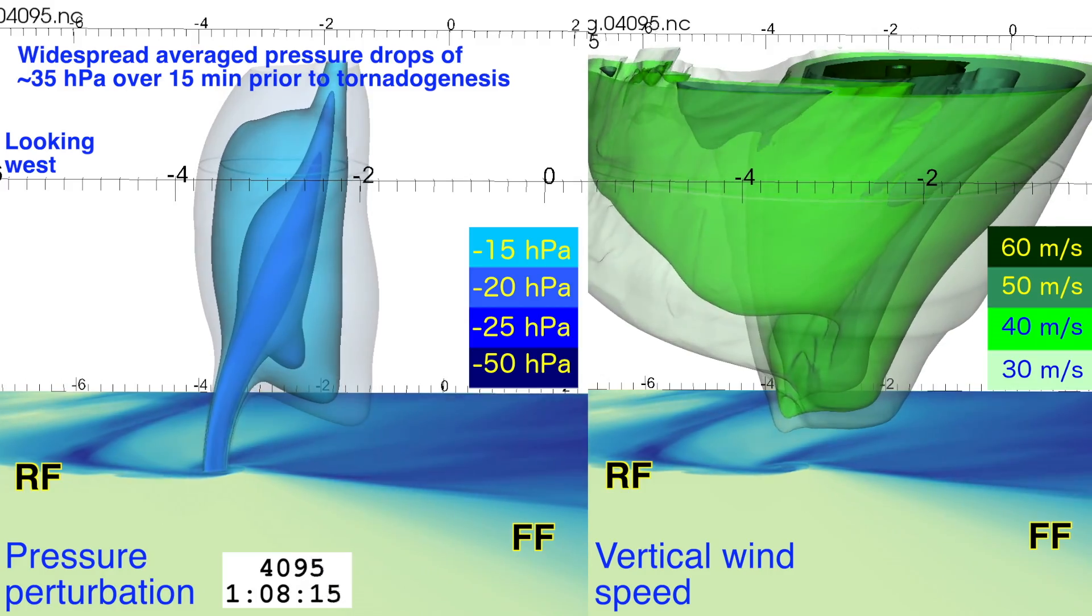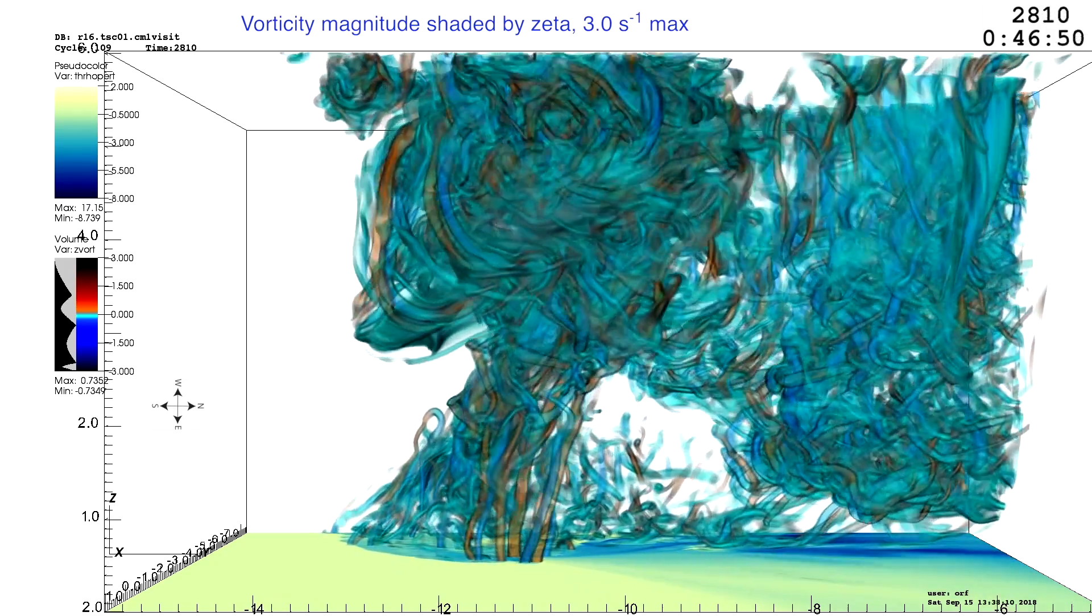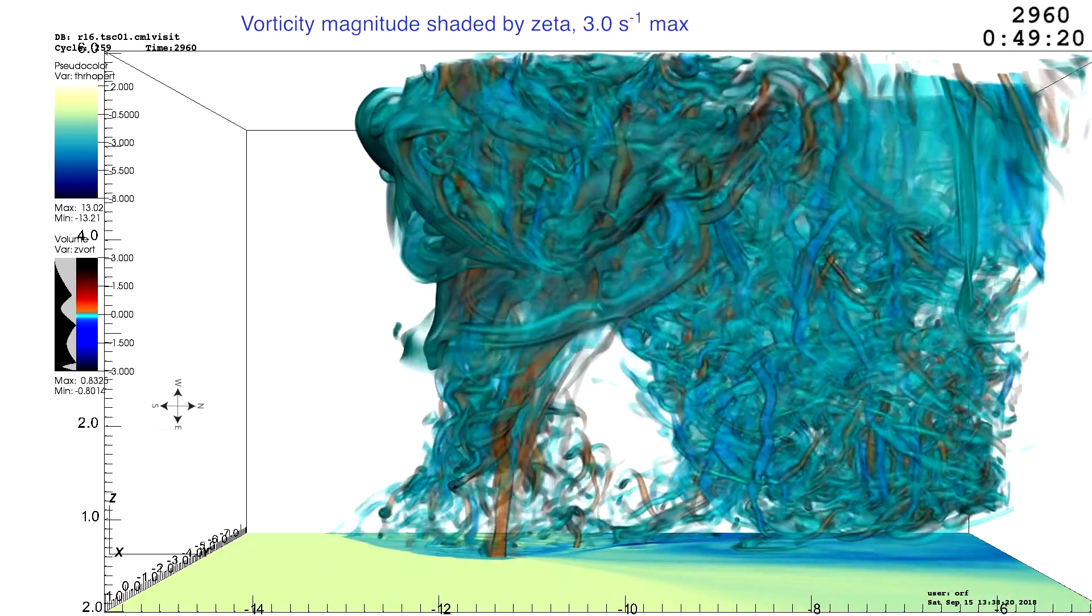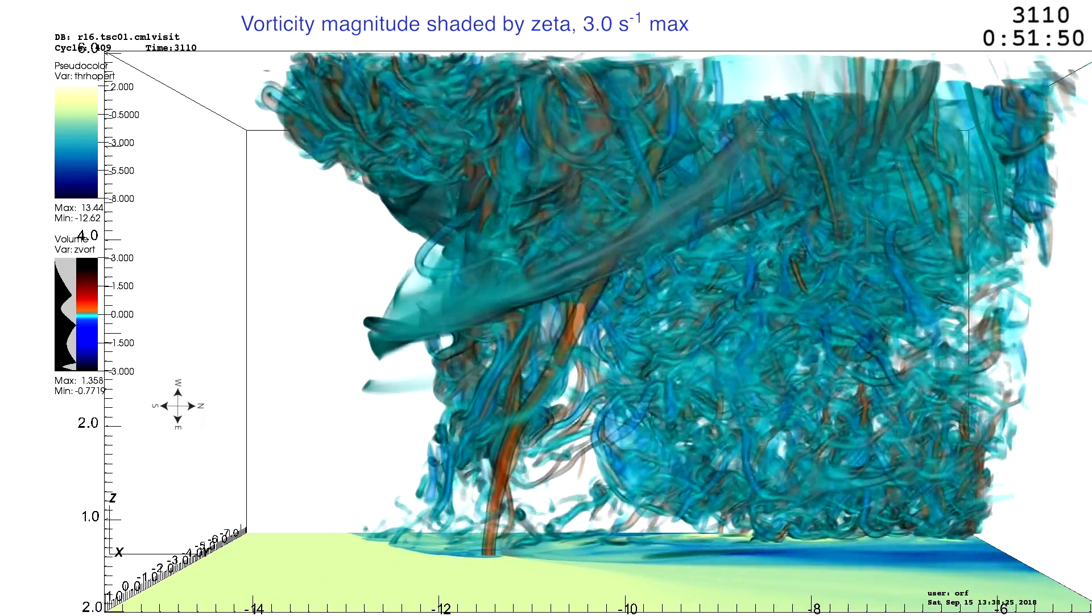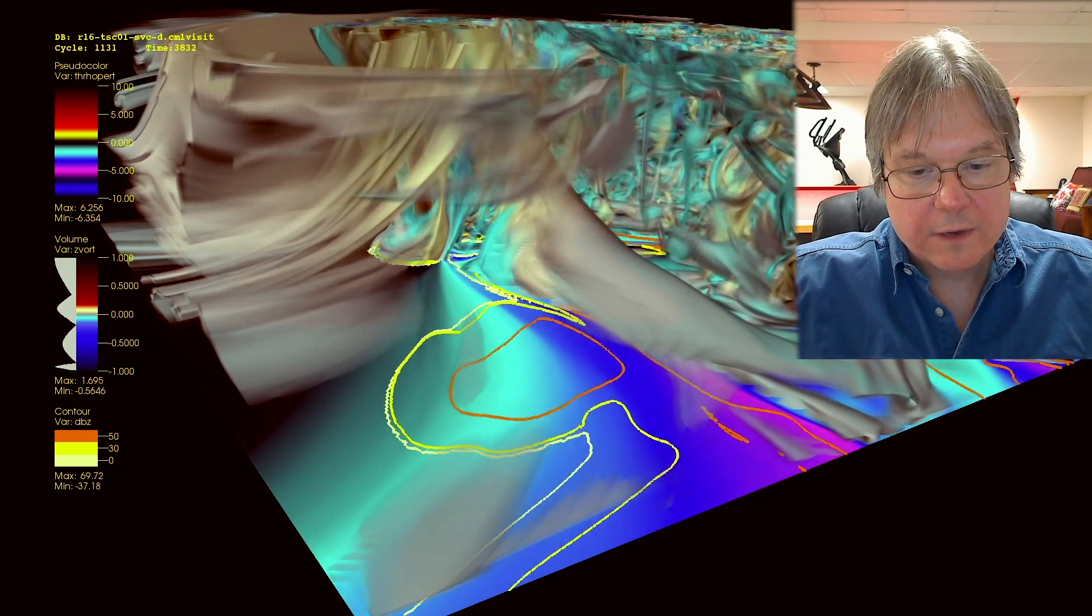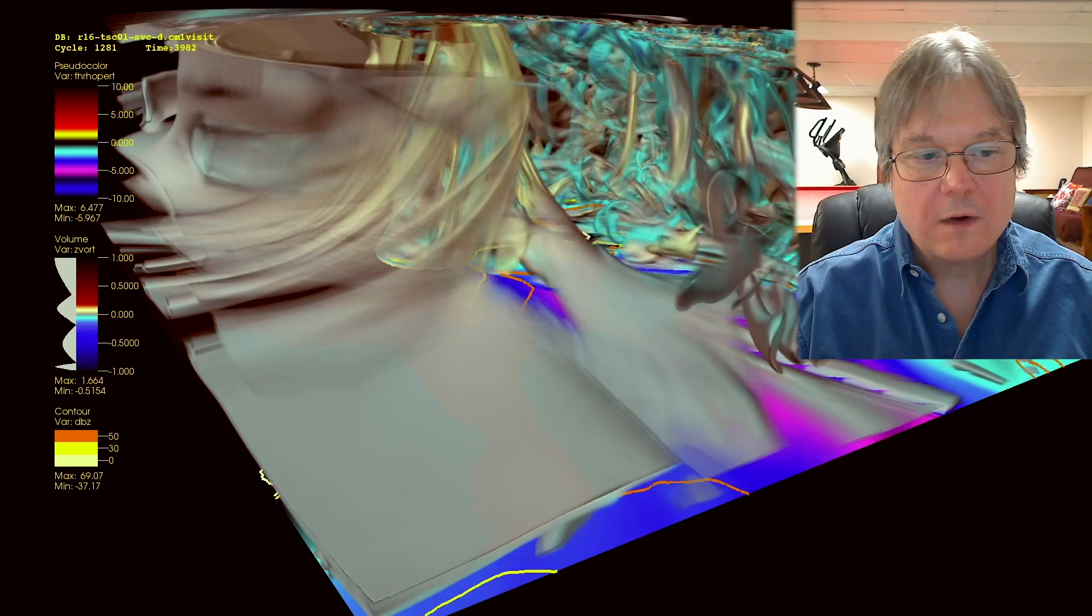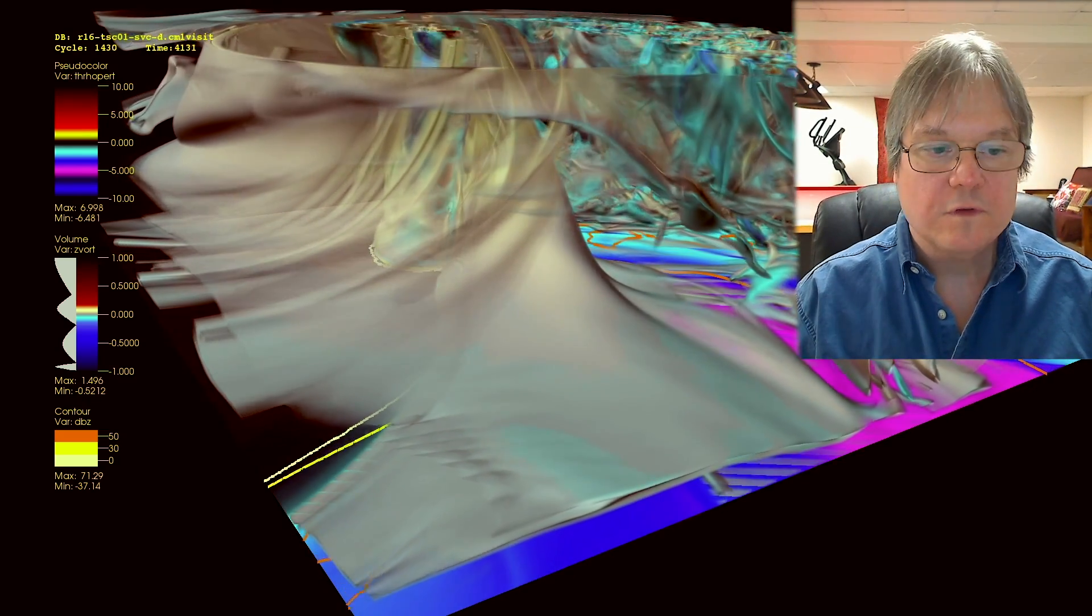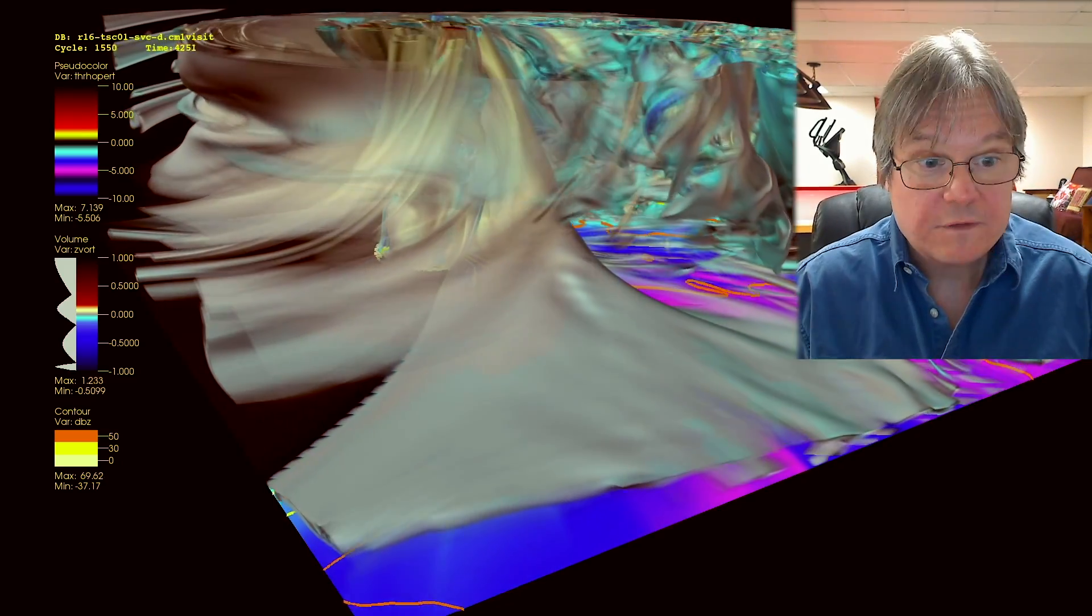The amount of stretching that the updraft can do is a lot more than we thought because the updraft is stronger than we thought near the ground. It's almost as if, when you look at what's going on near the ground, that the storm itself is finding ways to consolidate vorticity. It doesn't matter if it's from the environment or if it's from the cold pool or the storm has generated itself.